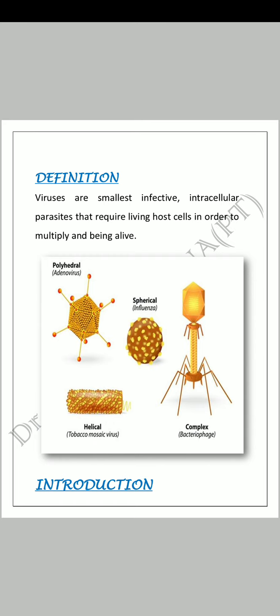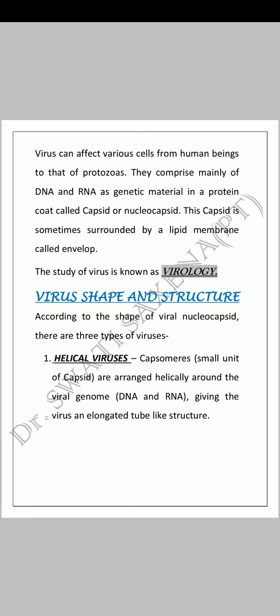Virus can affect various cells from human beings to protozoa. یہ human beings سے لے کے چھوٹے چھوٹے protozoa تک سب میں effect کر سکتے ہیں۔ They comprise mainly of DNA and RNA as genetic material in a protein coat called capsid. Virus کے اندر DNA اور RNA دونوں طرح کے genetic material ہوتے ہیں اور یہ ایک protein covering کے اندر ہوتے ہیں جس کو ہم capsid بولتے ہیں۔ Sometimes surrounded by a lipid membrane called envelope, which provides extra protection to the capsid.